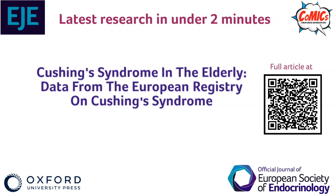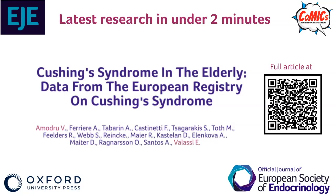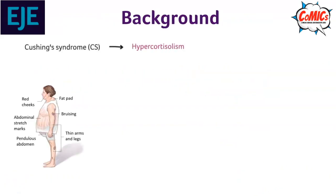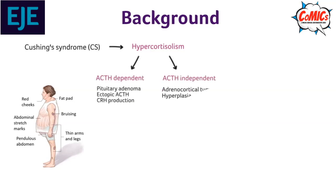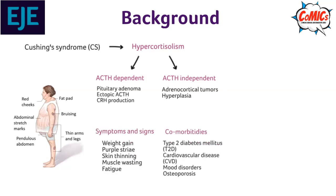Cushing syndrome in the elderly: data from the European registry on Cushing syndrome by Amadru et al. Cushing syndrome (CS) is a collection of symptoms and signs that occur due to excess cortisol in the body. The cause can be ACTH dependent or independent. Typical features of CS include weight gain, muscle wasting, and fatigue.